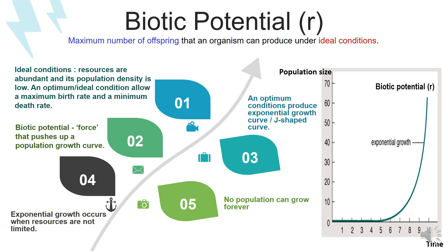Biotic potential, represented by the small letter r, is defined as the maximum number of offspring that an organism can produce under ideal conditions. Ideal conditions refer to two situations: first, where resources are abundant, and second, where population density is low. Under these conditions, there is a maximum birth rate and a minimum death rate — meaning the number of births exceeds the number of deaths. Biotic potential is the force that pushes up a population growth curve.